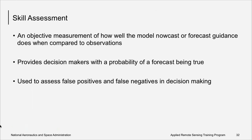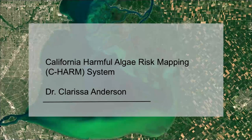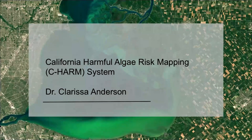Skill assessment is an objective measurement of how well the model nowcast or forecast guidance does when compared to observations. It is a key component for building forecast systems — no decision support system should be used without the rigorous effort it takes to do this. Without skill assessment, it is not possible to know if the forecast is accurate and within what uncertainty. It provides decision-makers with the probability of a forecast being true. To help us understand the value of skill assessment, it is my pleasure to introduce today's guest speaker, Dr. Clarissa Anderson, Executive Director of the Southern California Coastal Ocean Observing System.